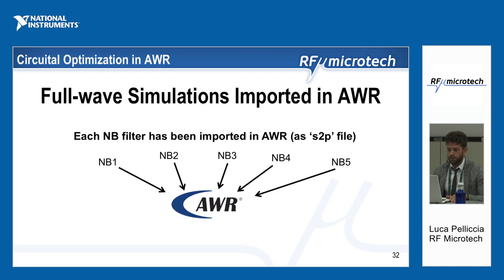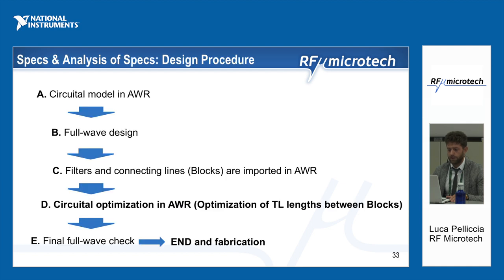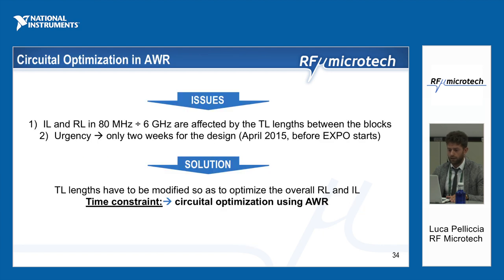At this point, we had all the blocks necessary to implement the final device. Each full wave design, optimized using the circuital model in AWR, was imported into AWR as a touchstone file with carefully embedded S-parameters at all ports. A circuital optimization of the transmission line lengths between these ports was then performed in AWR. One of the main requirements was good insertion loss and return loss in the 80 MHz to 6 GHz range, which is affected by the lengths of all the distances between the cascaded blocks.